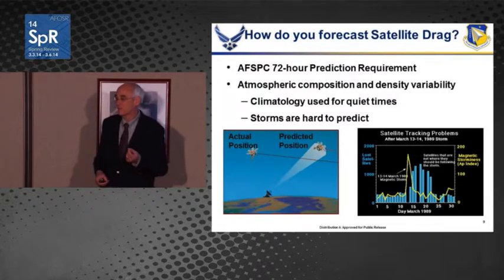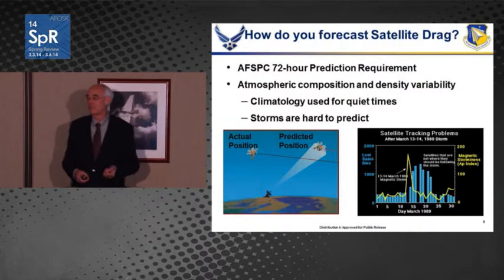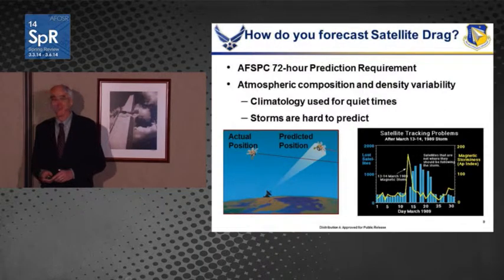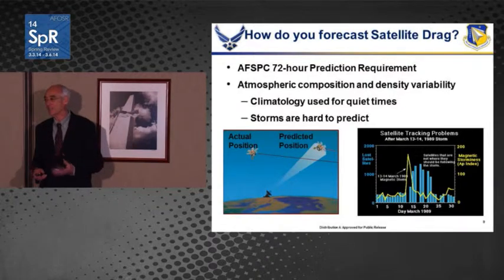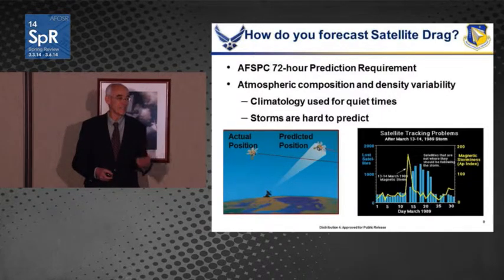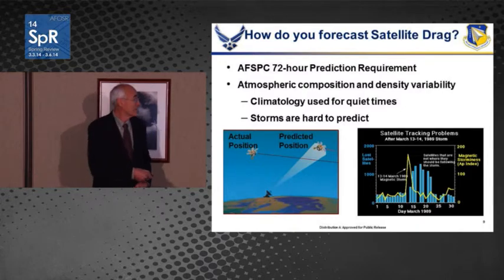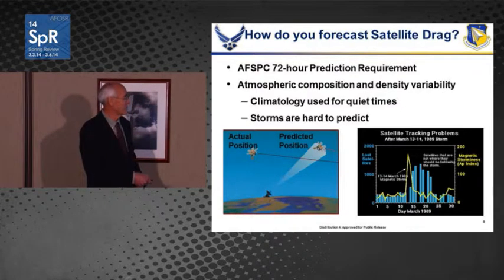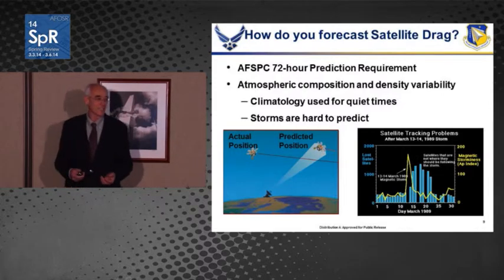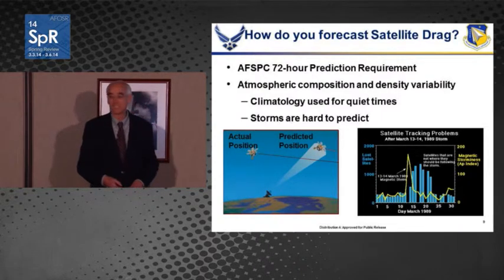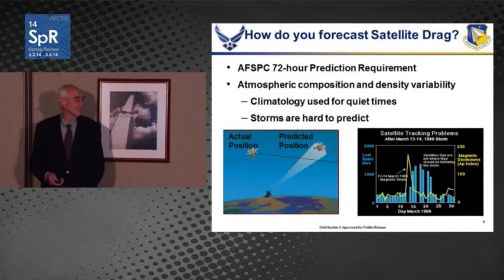Operationally forecasting satellite orbits is difficult. Air Force Space Command would like a 72-hour prediction. Currently that's done using a climatological model and calibration satellites, which does a good job most of the time but can't predict solar activity. A plot showing a 1989 magnetic storm illustrates the problem: the yellow line is a magnetic storm index, and the blue histogram shows the number of satellites lost from the catalog and requiring reacquisition after the event. We've learned a lot since 1989, but there's still a problem whenever there's activity on the sun.